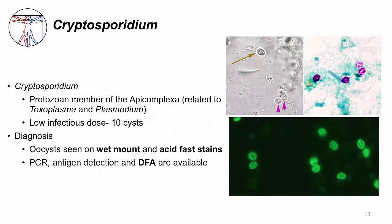The other protozoan that causes watery diarrhea is Cryptosporidium. It is not related to Giardia — it is a member of the Apicomplexa, which makes it more related to Toxoplasma and Plasmodium, the agents that cause toxoplasmosis and malaria. Cryptosporidium also forms cysts, and like Giardia, a low infectious dose of only 10 cysts will cause infection. Finding Cryptosporidium cysts is used for diagnosis: they can be seen on a wet mount of stool (top left image) or with an acid-fast stain of stool (top right image). You can also detect Cryptosporidium using PCR, antigen detection tests, and direct fluorescent antibody tests, shown on the bottom image.